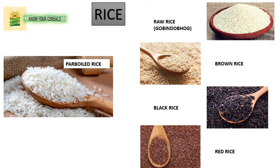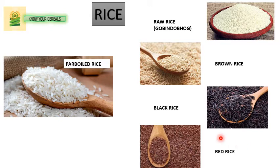So here is rice. We have raw rice — the Gobindobhoog Chaal in Bengali is the raw rice. This is parboiled rice. When we learn about rice in detail we will discuss the difference between raw rice and parboiled rice. This is brown rice, black rice, and red rice — so there are many varieties of rice with different roles and functions. The general rice we use mainly is parboiled rice and also Gobindobhoog, which is the raw rice. Now people are also going exotic with brown rice.